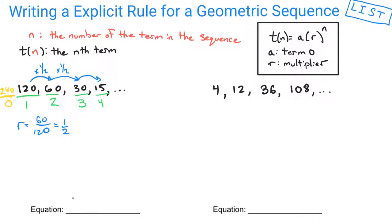As we take a look, then our rule for t of n would be equal to that term 0, which is 240 in this scenario, multiplied by that 1 half, and it would be to the nth power, and that would be your geometric sequence.